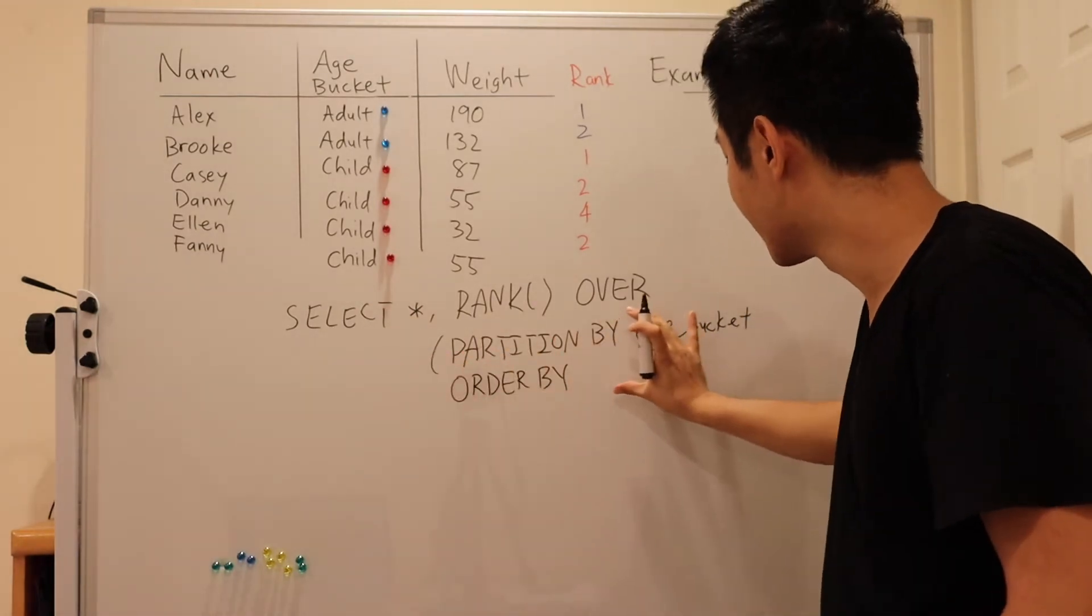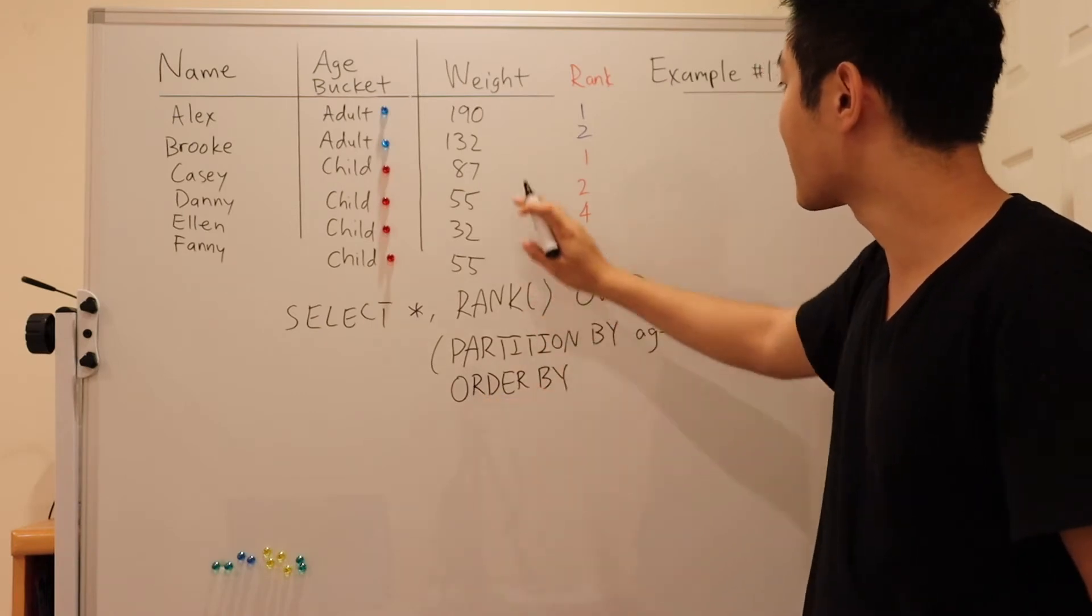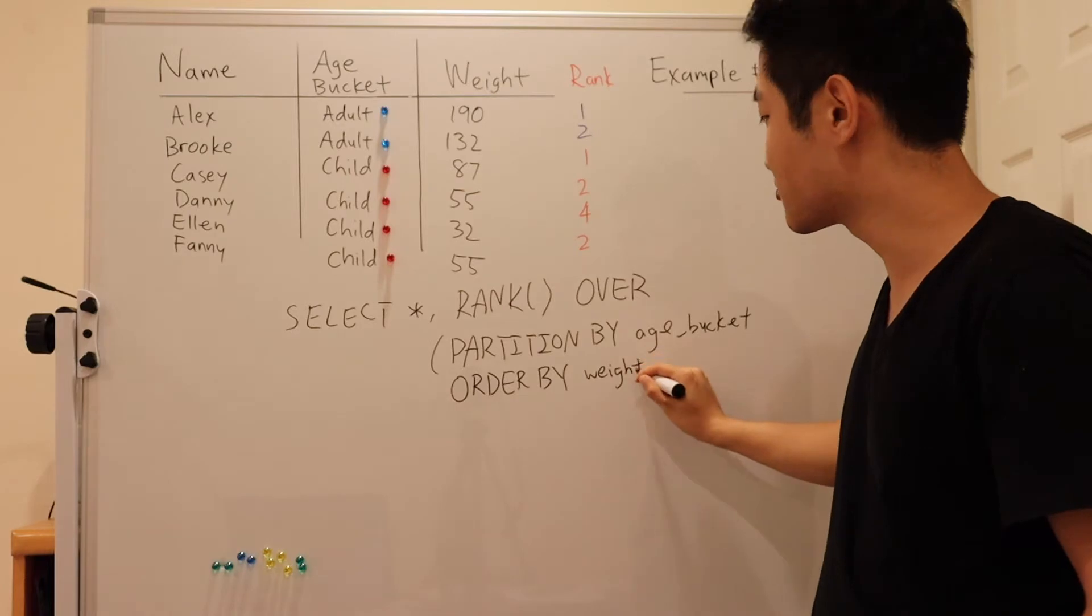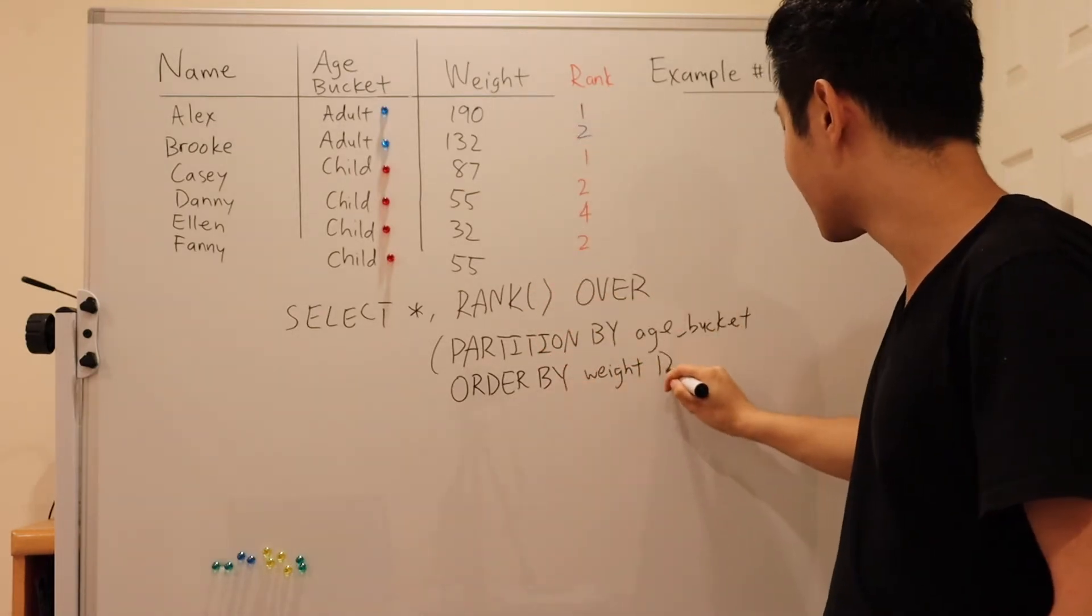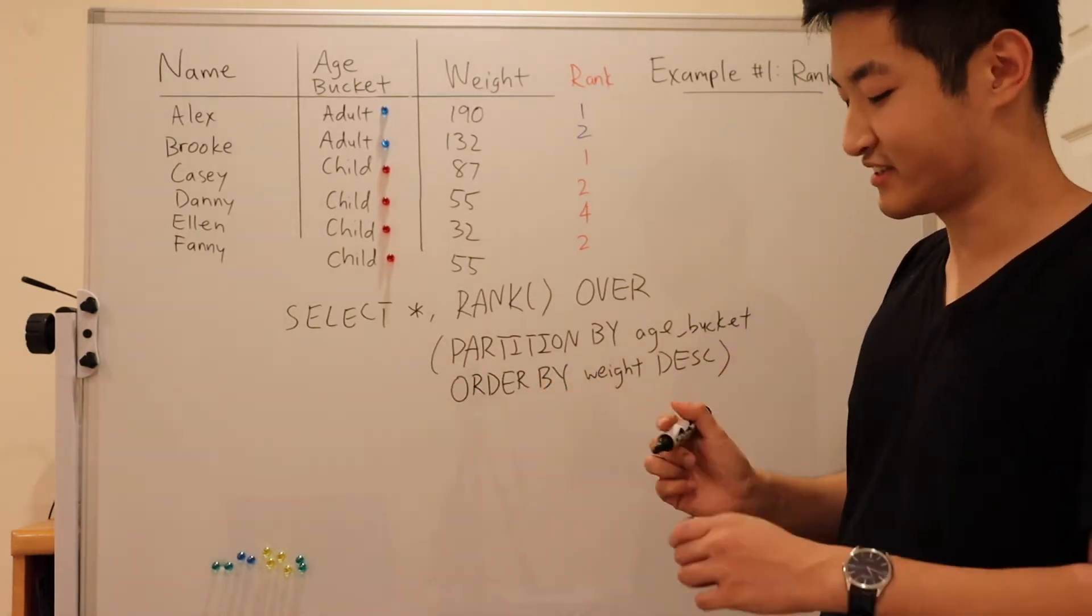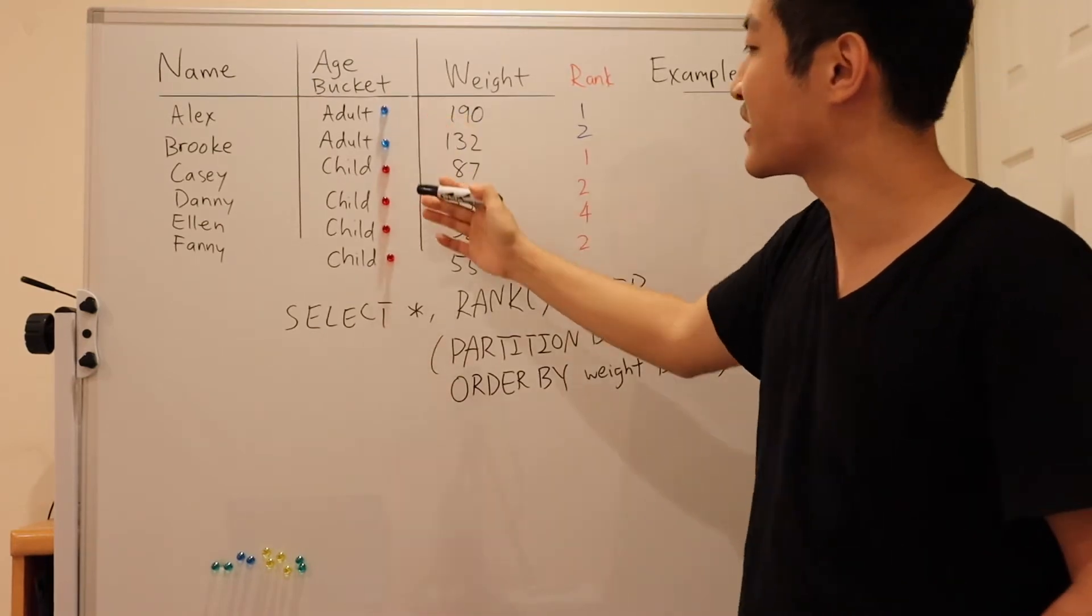We're only ordering rows within the partitions that we've just defined. So we're going to order by weight. And since we want the largest weights to come first, we're going to say descending. And that is the query for computing rank partitioned by age bucket.